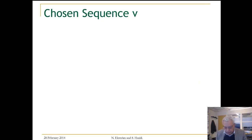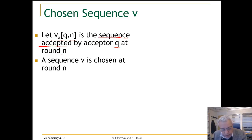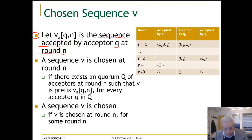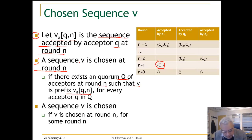We want to understand the notion of a chosen sequence. We let VA sub Q and N be the sequence accepted by acceptor Q at round N. A sequence V is chosen at round N if there exists a quorum of acceptors at round N such that V is a prefix of what Q at round N has accepted, for every acceptor in the quorum Q — where a quorum is a majority set.